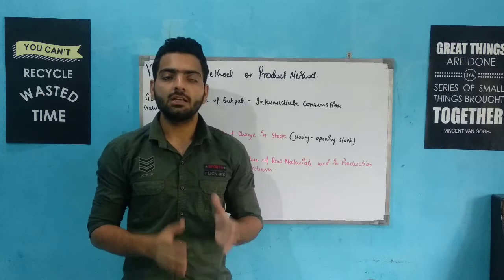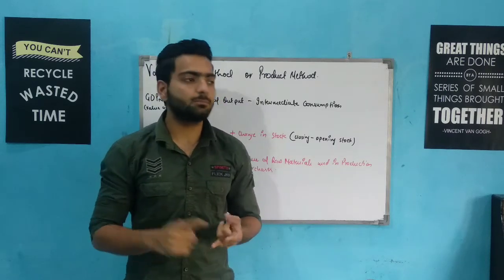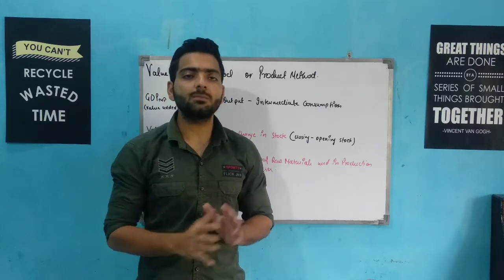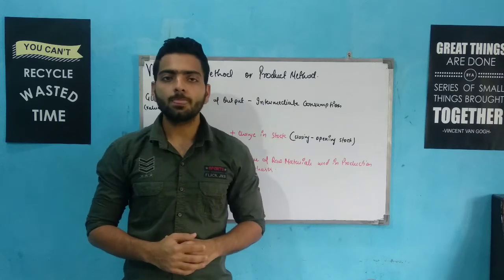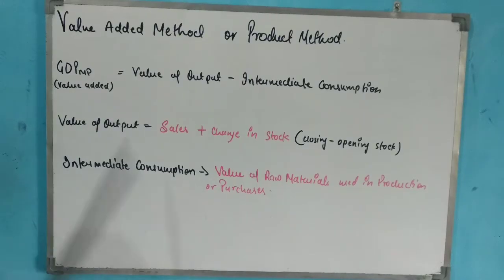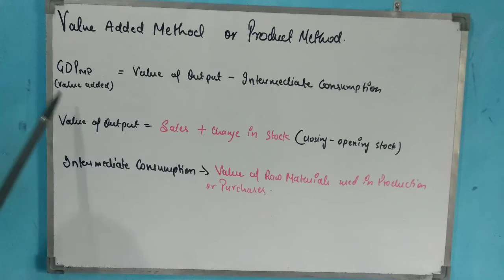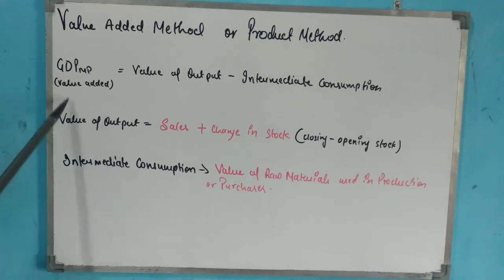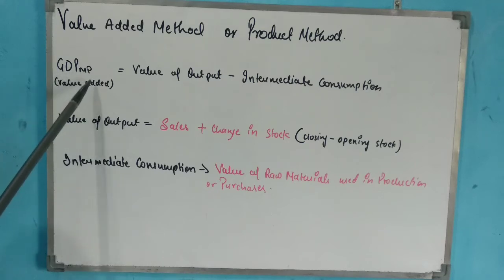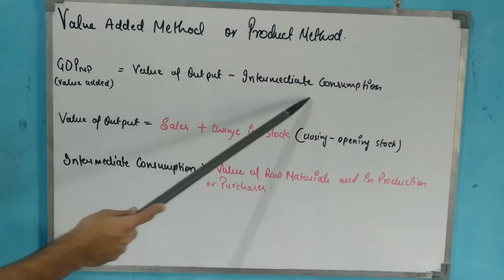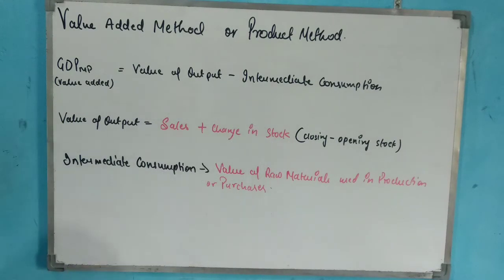Value addition means production. We will discuss the value added method, also called the product method. The formula for GDP at MP is: Value of Output minus Intermediate Consumption.